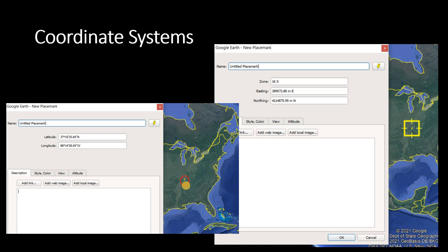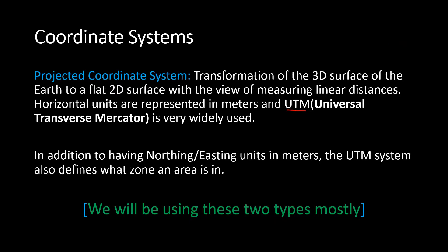Here is our previous picture where we located a certain point with the help of the coordinate system. We had the latitude and longitude of this point to identify it. Now when we use the UTM system, we have the easting and northing, and then we have the zone selection for the same specified point. So why do we need the UTM system when we already have the geographic coordinate system?